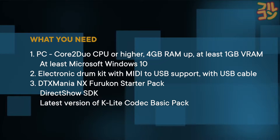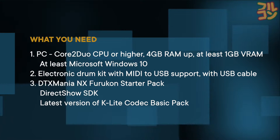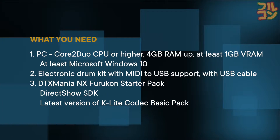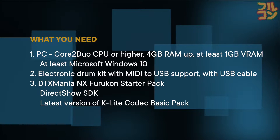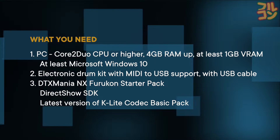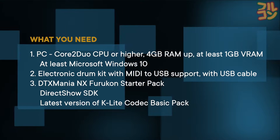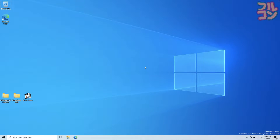Now for the files. You need the DTX Mania NX Furukon Starter Pack. You can choose between the Basic FSP which contains the High Voltage skin, or the FSP All Skins which contains all Gittador skins available. You also need the DirectShow SDK and the latest version of K-Lite Codec Basic Pack. The Google Drive link is in the description of this video.